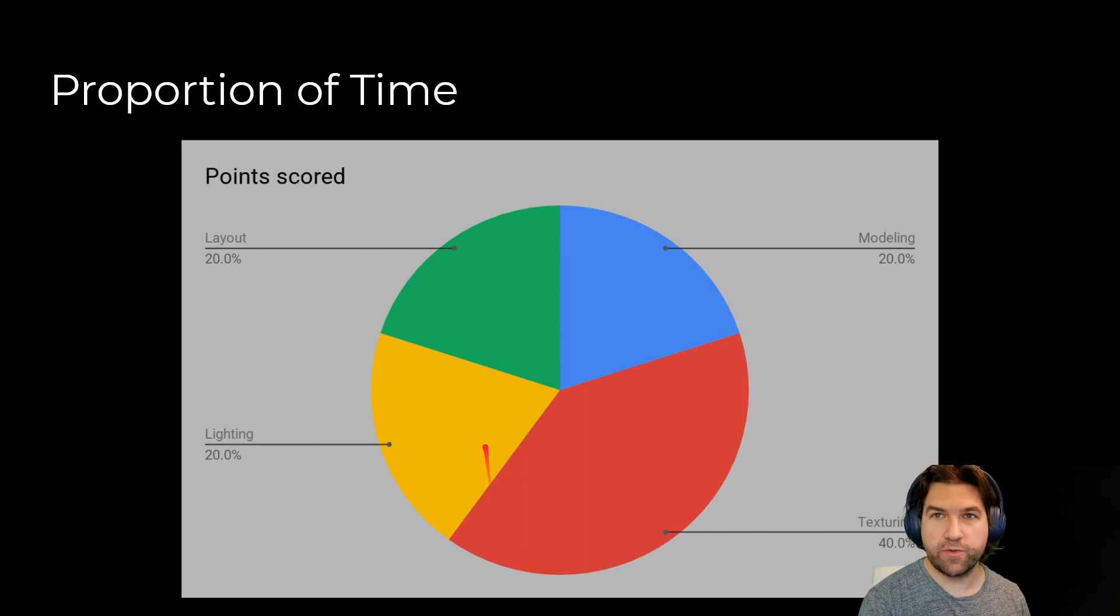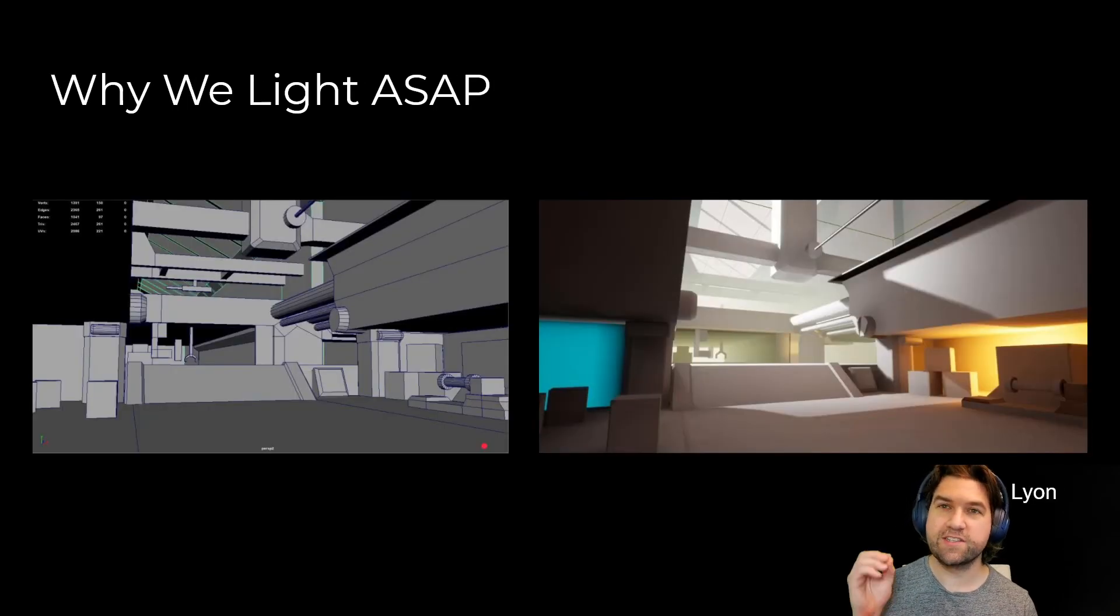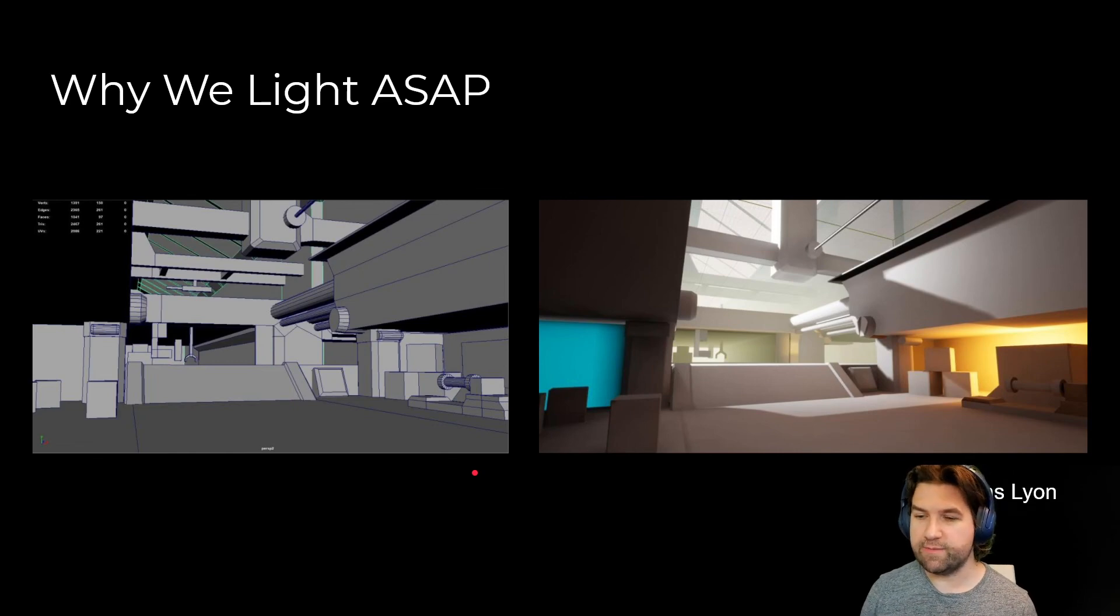It's different for characters, but for environments, it's really crucial to start lighting right away. Another piece by an MSU grad, Thomas Lyon, who started his blockout and then lit it right away, which helped him figure out what things need to happen and where he needed to put focus, effort, and attention.